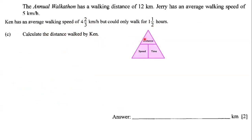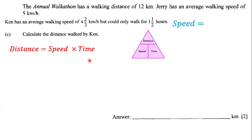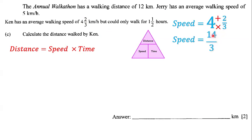Here we want to calculate the distance. According to the speed-distance-time triangle, distance is going to be speed multiplied by time. The speed is 4 and 2 over 3. Let's convert this into an improper fraction: 4 times 3 is 12, plus 2 is 14, keeping the denominator — so it's 14 over 3. The speed is 14 over 3 kilometers per hour.